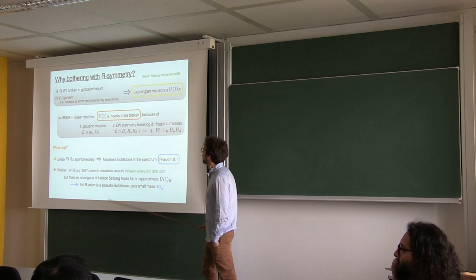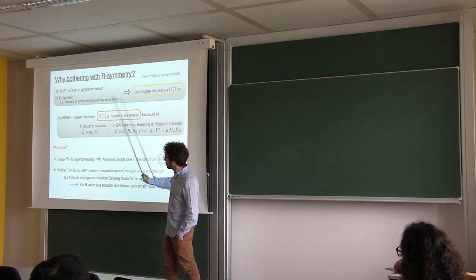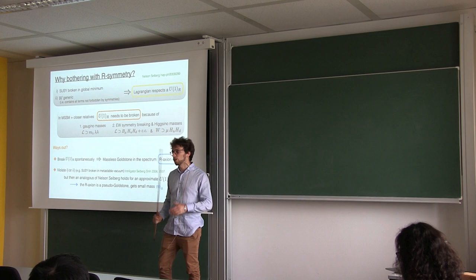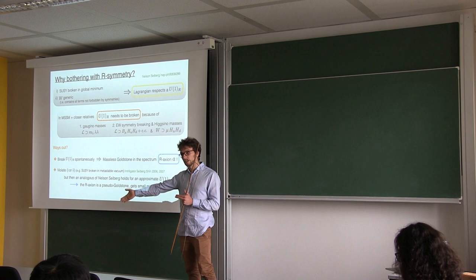These are two phenomenological motivations and ways out to respect the Nelson-Seiberg result. And these phenomenological motivations are, for example, to break U(1)_R spontaneously. And this gives automatically rise to a massless Goldstone boson in the spectrum, which is the R-axion. Of course, you could also extend the MSSM, but this is not what I will talk about. Also, you can violate one of these two assumptions. For example, you can say that supersymmetry is not broken in a global minimum. Instead, it's broken in a metastable vacuum where we live in that has a very long lifetime that allows for the fact that we are still there and we have not yet decayed to the SUSY-preserving vacuum.